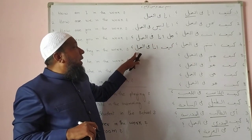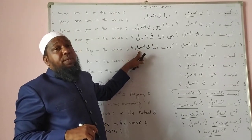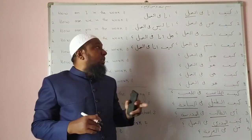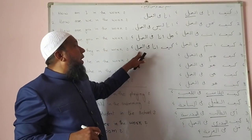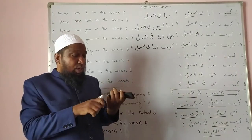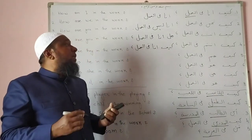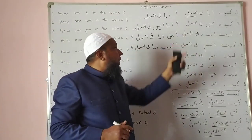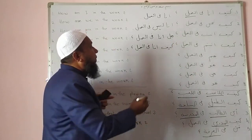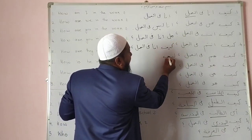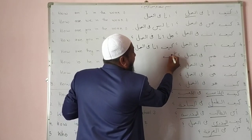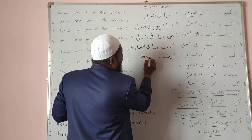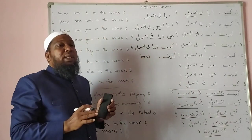And the fourth is the interrogative sentence. In interrogative sentences we ask specific questions. For example: Kaifa ana fil amali — How am I in the work? So in Arabic we have interrogative words. The first word is Kaifa, which means 'how' — kaisa hai.